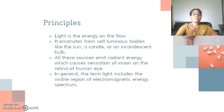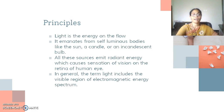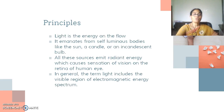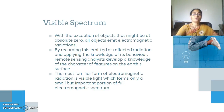The basic principles involved in photometry are: light is the energy in flow. It emanates from self-luminous bodies like the sun, a candle, or incandescent lamp. All these sources emit radiant energy which causes sensation of vision on the retina of the human eye. In general, the term light includes the visible region of electromagnetic energy spectrum, which forms a very small portion of the electromagnetic spectrum.